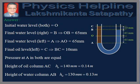Now, for equilibrium, pressure at A on both sides of the tube must be equal. Let the height of oil column AC be equal to HO, which is equal to AO plus OB plus BC. Putting the values, we get HO is equal to 140 mm, which is equal to 0.14 meters.